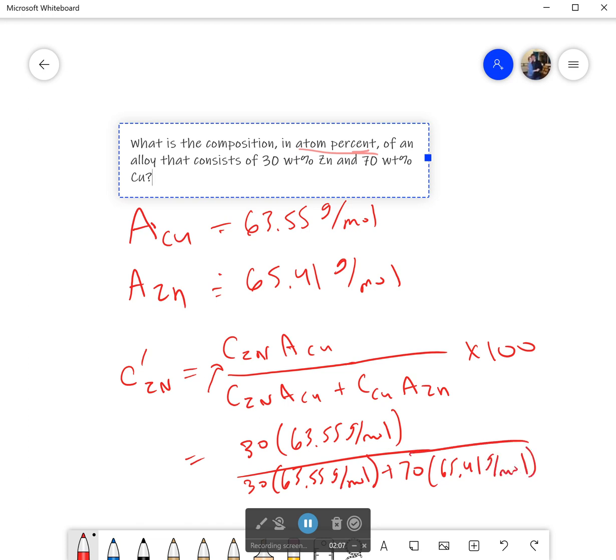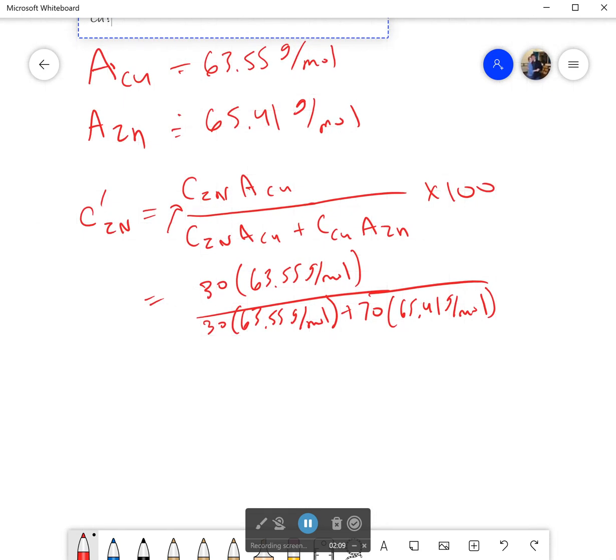Okay, now with that, I can plug it in and what I get is 29.4 atom percent. Also, since there's only two components and they have to add to 100, I can skip plugging this all in again and just say 100 percent minus 29.4 percent is going to be equal to 70.6 percent. And that would be the atom percentage for copper.